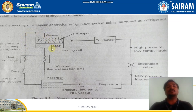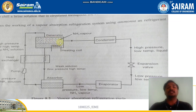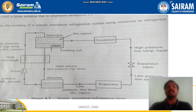When it reaches the generator, external heating is applied. The purpose of this external heating is to evaporate the vapor content present in the strong ammonia solution. The remaining ammonia content then passes through the condenser. The function of the condenser is to absorb heat and reject it to the surroundings — which is why the back side of a refrigerator is always warm.